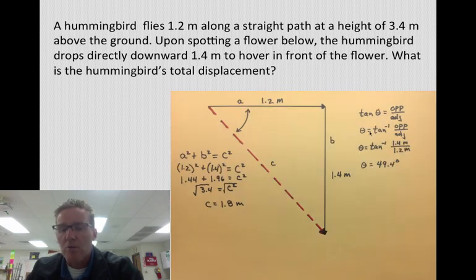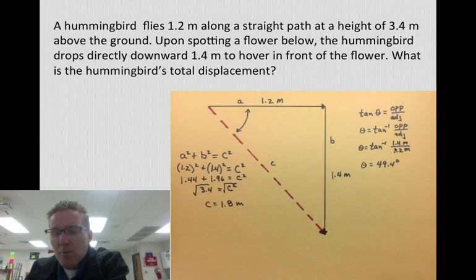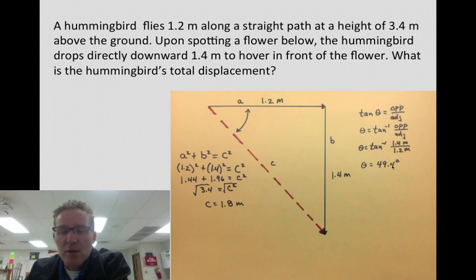Inverse tangent multiplied by 1.4 divided by 1.2, and we get 49.4 degrees.